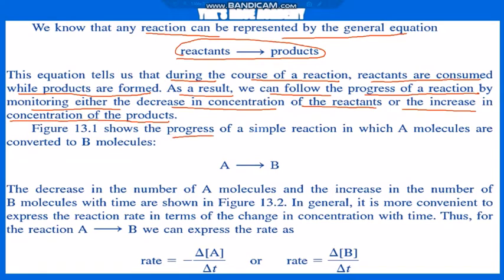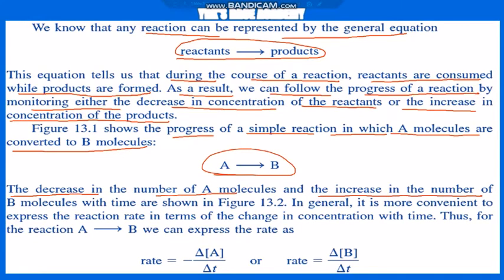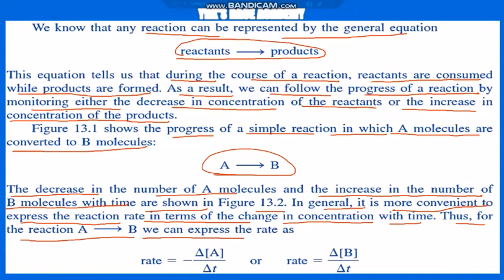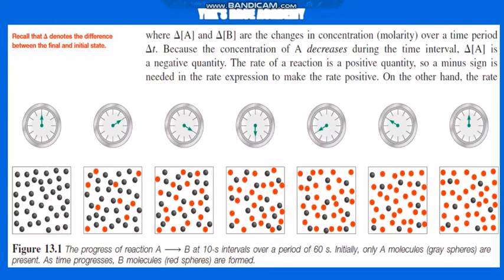We have a diagram that shows the progress of a simple reaction in which A molecules are converted into B molecules. The decrease in the number of A molecules and increase in the number of B molecules with time are shown in the diagram. It is more convenient to express the reaction rate in terms of change in concentration with time. For the reaction A → B, rate = −ΔA/ΔT or rate = ΔB/ΔT, where delta denotes the difference between the final and initial state over a time period ΔT.